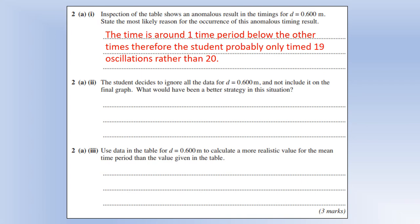So that's not going to be a timing error, that's going to be the student has timed only 19 oscillations rather than 20. That would be the best explanation as to why there's exactly or roughly one time period difference.